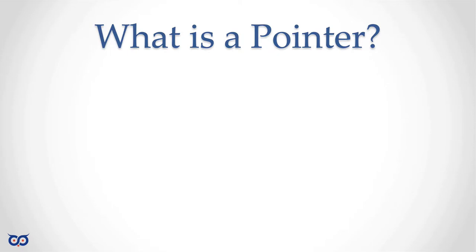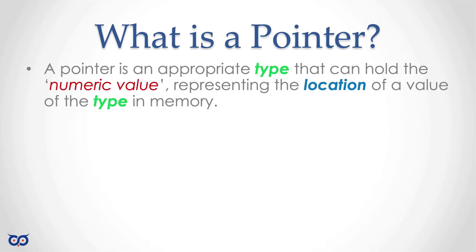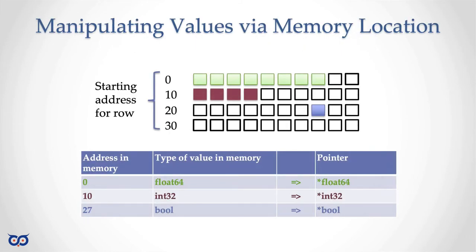So now that we know what we call a pointer, let's look at the definition. If we look at the definition of what a pointer is in the Golang documentation, it says: a pointer is an appropriate type that can hold a numeric value — and that numeric value is an address in memory — representing the location of a value of that type in memory. Which is exactly what we just saw. We saw that a pointer was nothing more than something that has a numeric value representing the location in memory holding that type.